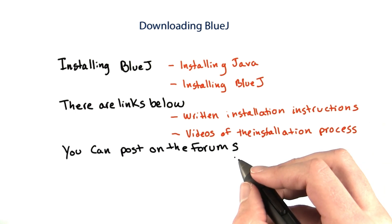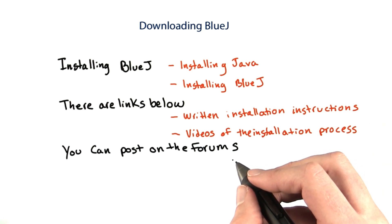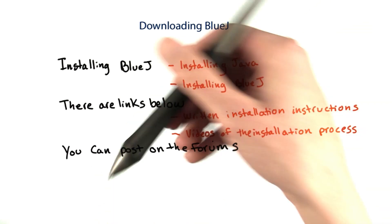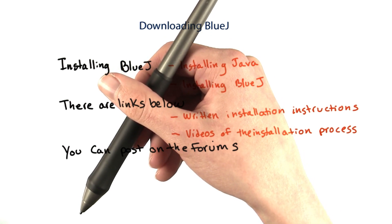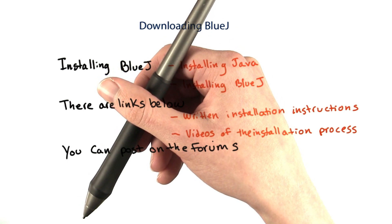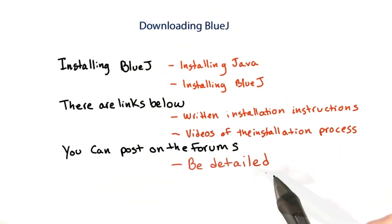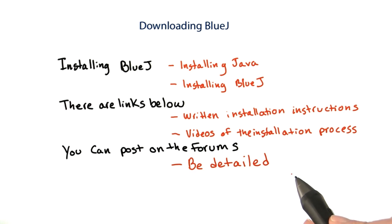If you can't get BlueJ running, it's not your fault — it just means your computer is set up differently from ours. We can help. Post your question on the forums. Below this video, there's a section called Discussions. You can read other people's questions and answers, or you can ask a question yourself. When you're asking a question, give us as much information about what you did and what the result was as you can. The more you tell us, the clearer our advice will be.